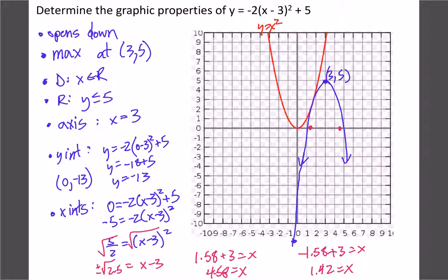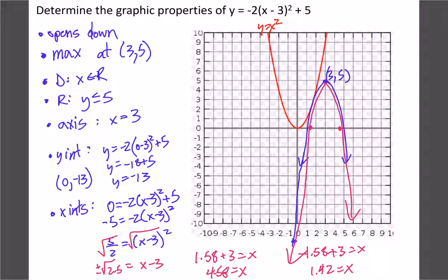So you can see this graph — those are our x-intercepts, and we know our y-intercept was negative 13, so it should look something like that. That gives you the idea of how we can figure out what these graphs look like accurately without relying on your calculator.